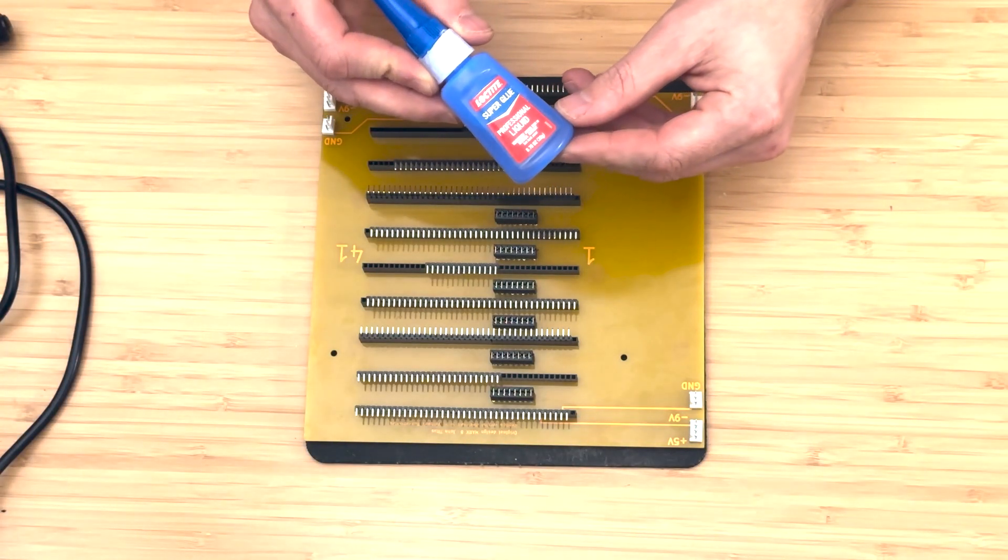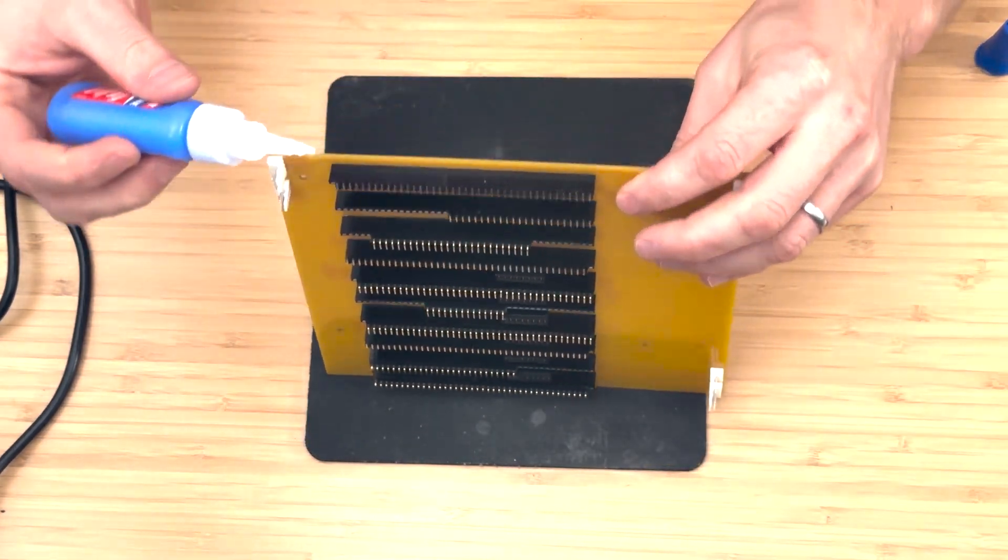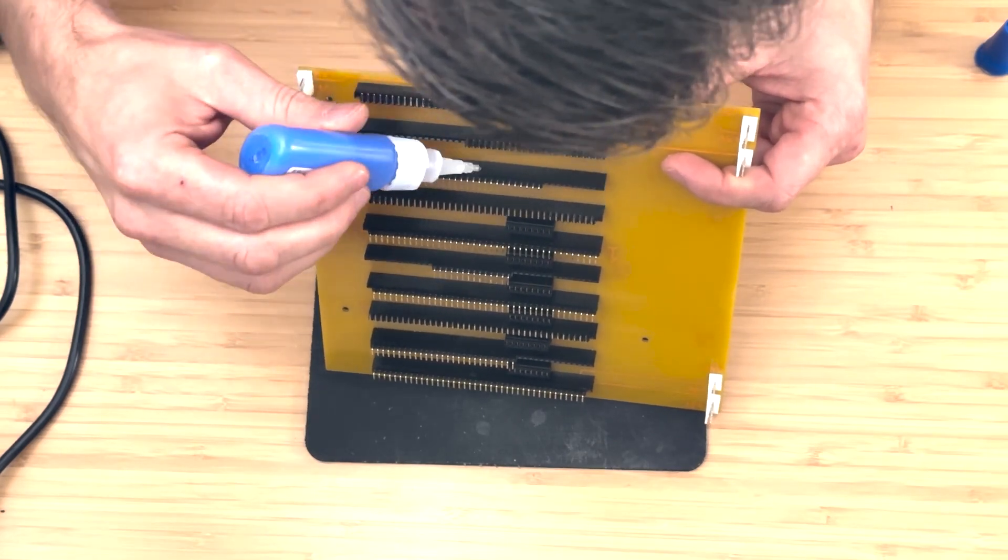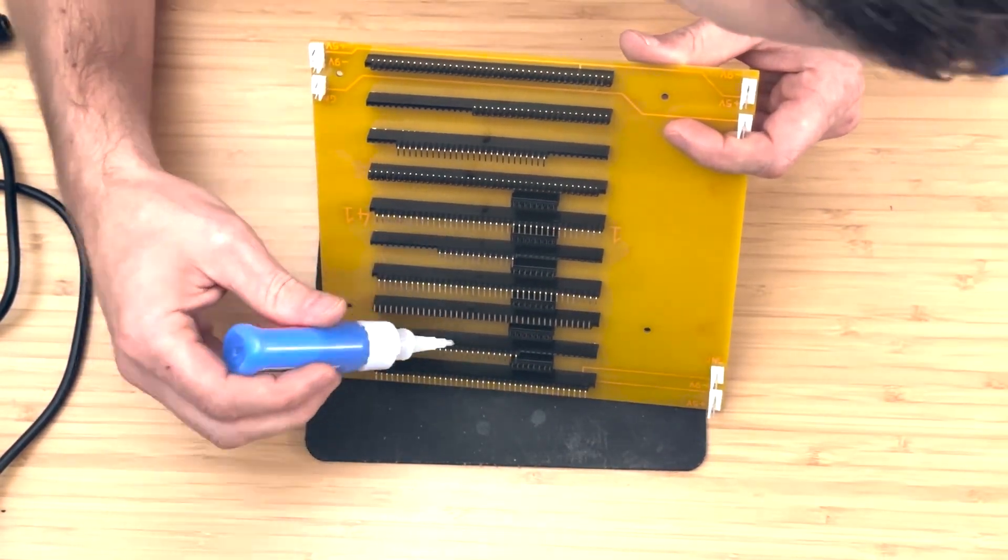Finally, to ensure that the splice connectors remain securely in place, we'll apply a small amount of glue to the joints. I used super glue because that's all I had on hand, but ideally a different type of glue that doesn't leave stains would be preferable for this task.